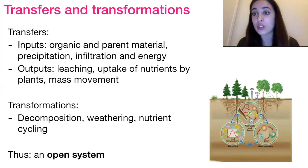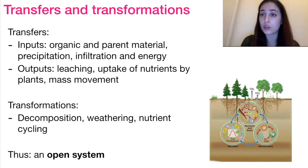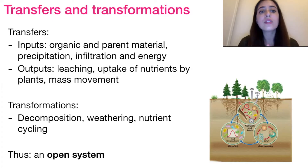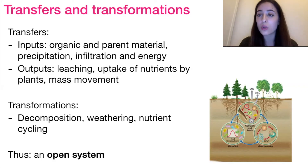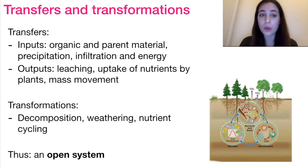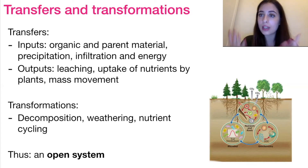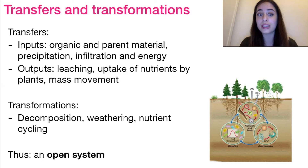So what are some transfers and transformations in soil? Since we are applying the systems approach here, and it is an open system, what are the transfers and transformations? Well, the transfers in terms of inputs are organic and parent material, precipitation, infiltration through the soil layers, and energy as well. The outputs include leaching, so when minerals or water are leached out of the soil, uptake of nutrients by plants as well, and mass movement. In terms of transformations, we have decomposition, weathering, and nutrient cycling, including carbon and nitrogen cycles. Because of the transfers and transformations going on, we can conclude that it is an open system.